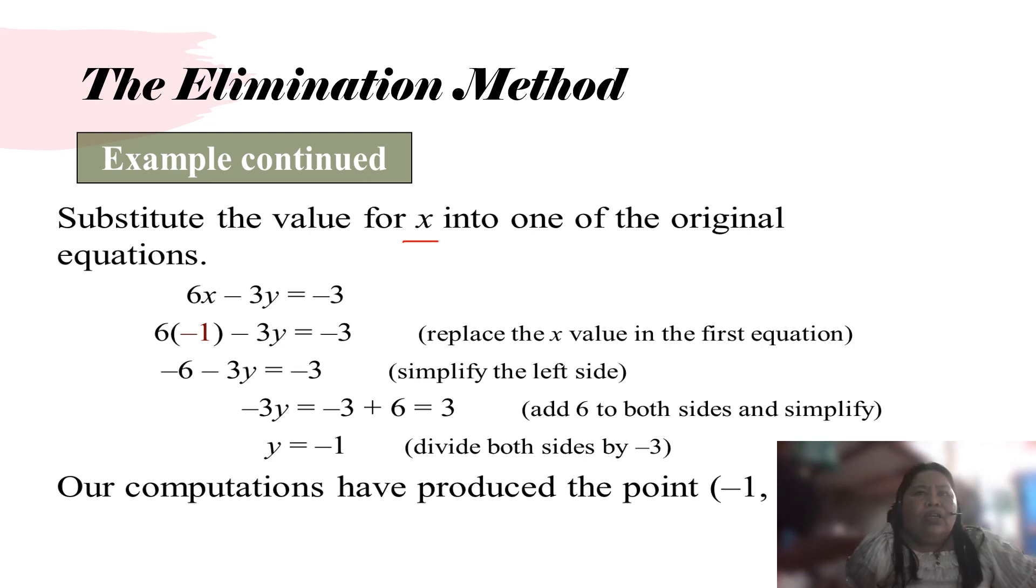Just replace the x value in the first equation and simplify the left side. So we have negative 3y. Bring down and then negative 6 plus 3y equals negative 3. When you transpose, simplify: negative 3y equals negative 3 plus 6, which is 3. Divide both sides by negative 3, so we get y equals negative 1. So for our computation, we have x equals negative 1 and y equals negative 1.